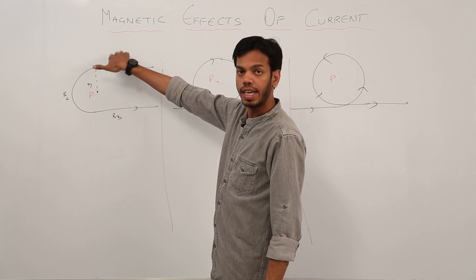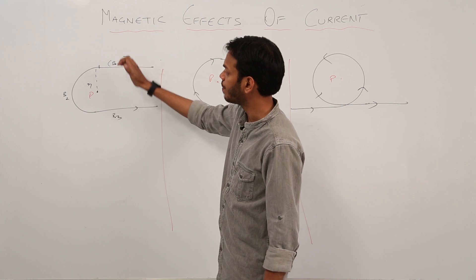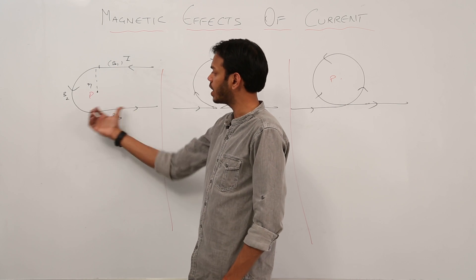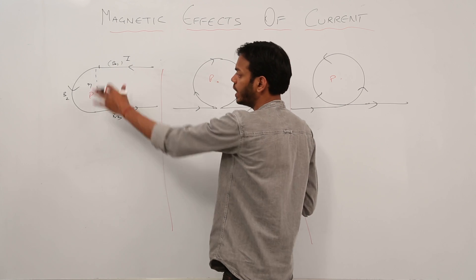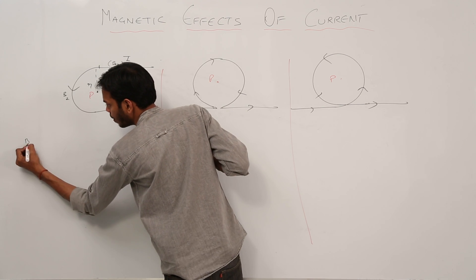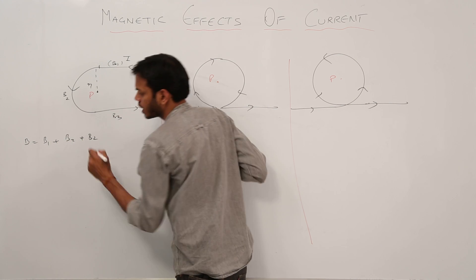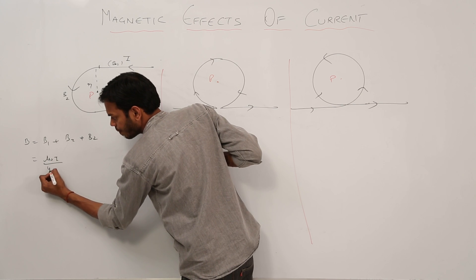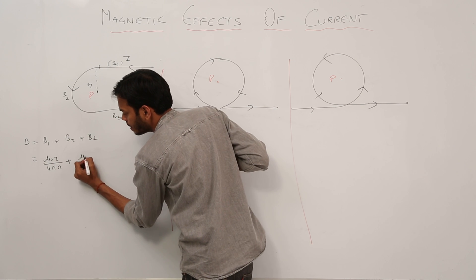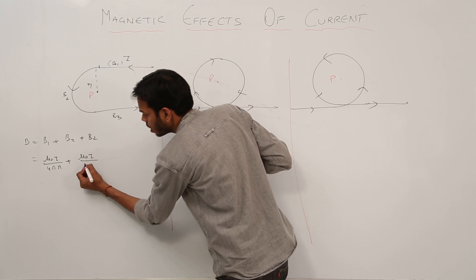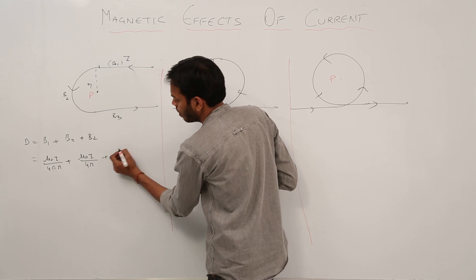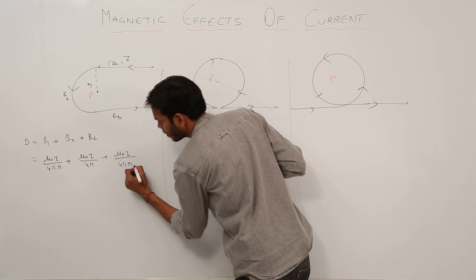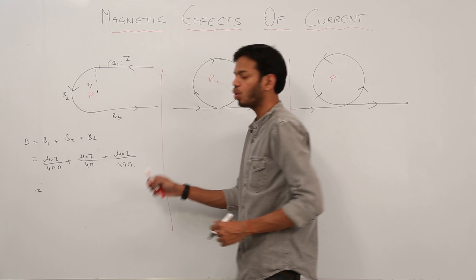Let's check directions at point P. Magnetic field due to the first conductor part is vertically outwards — thumb in direction of current, fingers curl outward. For the semicircular path, current is going like this, so again vertically outwards. For the third part also vertically outwards. So for all three cases the direction is the same, and the net magnetic field is the sum: B1 for the semi-infinite straight wire is mu-naught I upon 4 pi R; B2 for the semicircle is mu-naught I upon 4R.